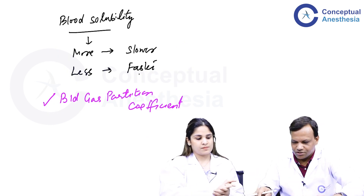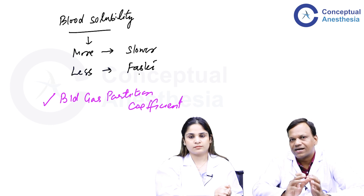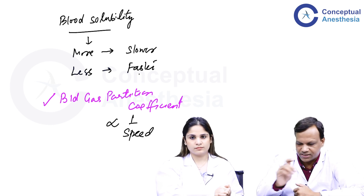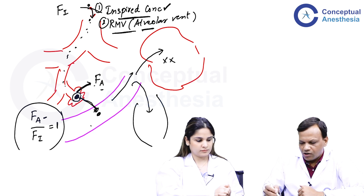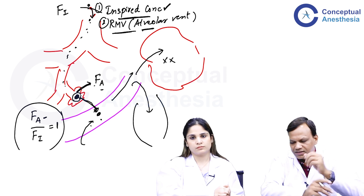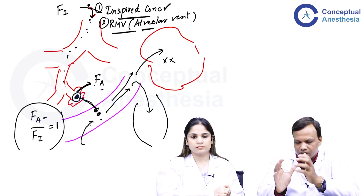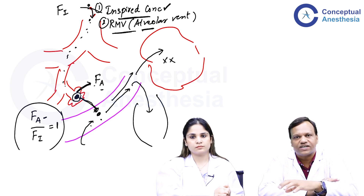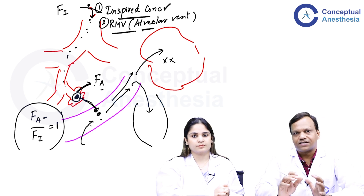Two important concepts covered: MAC is inversely related to potency, and blood gas partition coefficient is inversely related to speed — more coefficient means slower onset, less coefficient means faster onset. The drug's transfer from alveoli to blood also depends on pulmonary blood flow, which depends on cardiac output. If cardiac output is more, blood quickly carries away the drug and it takes more time to reach equilibrium. In patients with cardiac problems where blood flow is low, the anesthetic agent may produce quicker onset than expected. With this basic discussion we can now go to each drug separately, starting with nitrous oxide.